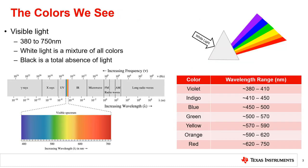Also discussed in the Fundamentals of Light Sensing chapter was electromagnetic waves and their lengths. The visible light wavelengths are from 380 nanometers to 750 nanometers. Here you can see the visible colors and their corresponding ranges of wavelengths. White light is a mixture of all the colors in the entire visible spectrum, and black is a total absence of light.